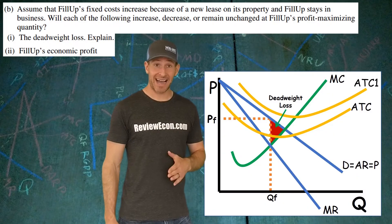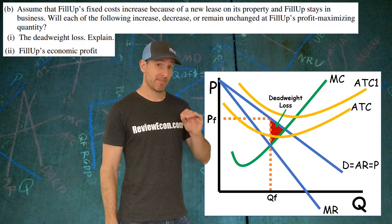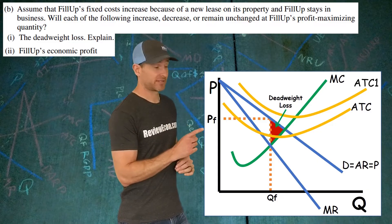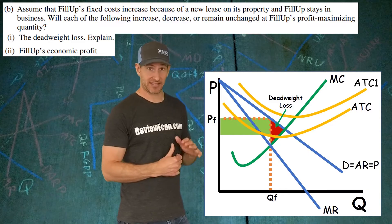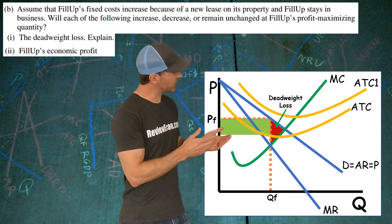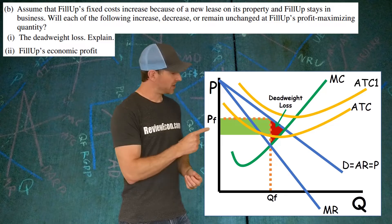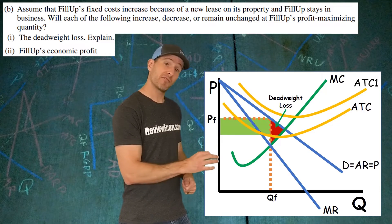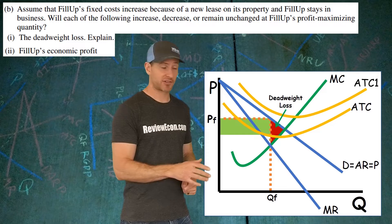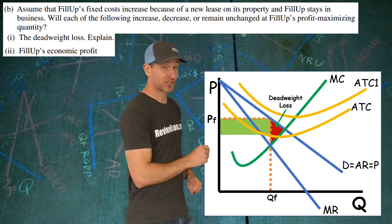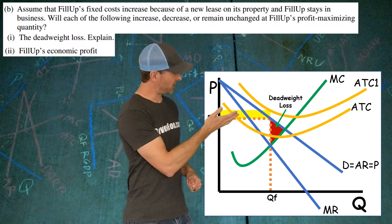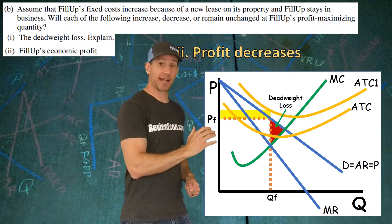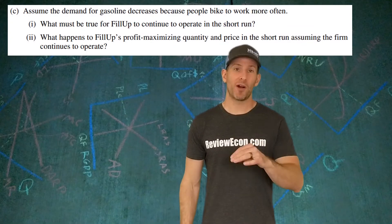For part B-II, look at the impact on profit. Before the increase in fixed costs, we had a certain profit area. When average total cost increases, the profit maximizing quantity doesn't change since marginal cost doesn't change, but the higher ATC curve decreases profit. In this case, the firm went from earning a profit to an economic loss.